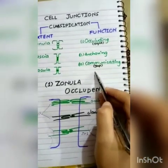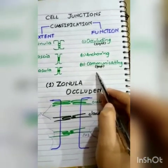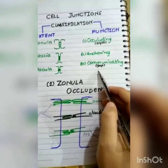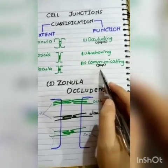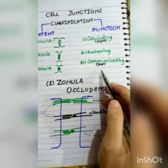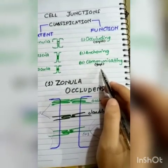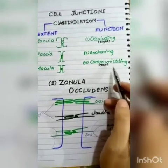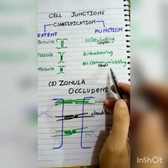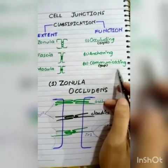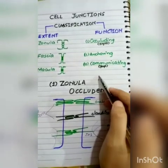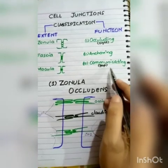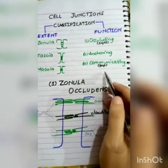Communicating junctions are also called gap junctions. They do not completely block the intercellular space; instead, they develop a transmembrane channel which forms a tubular network. This allows substances to be transferred from one cell to the other.